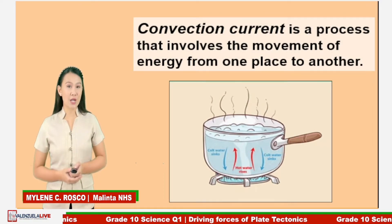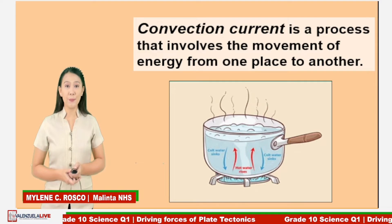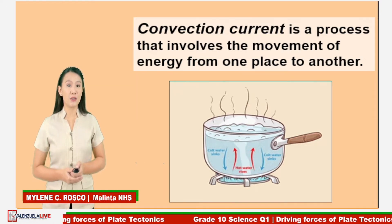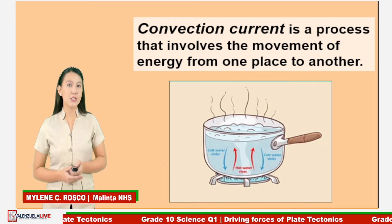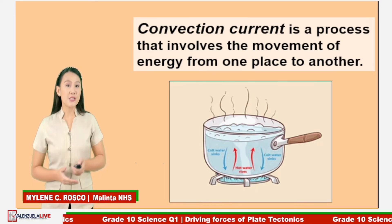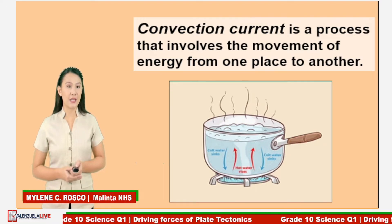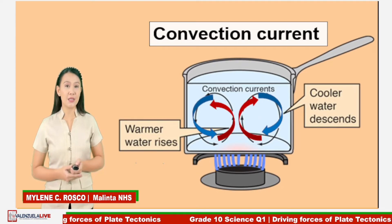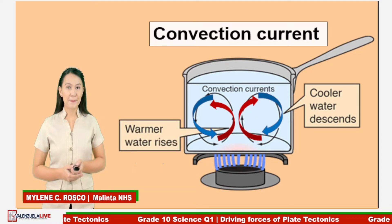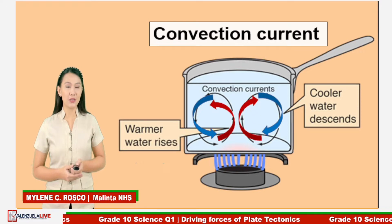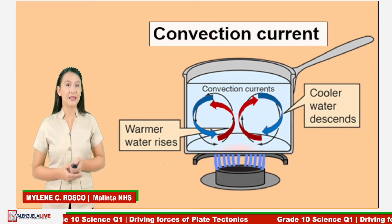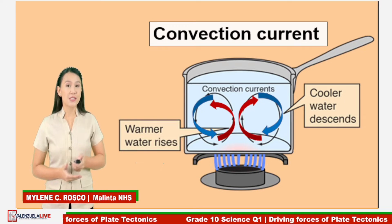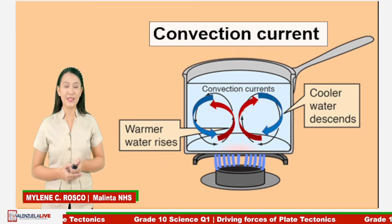Convection current is a process that involves the movement of energy from one place to another. When boiling water on a stove, the temperature of molecules within the liquid increases, and they slowly begin to move at a rapid rate. These molecules get charged up, thus producing kinetic energy. These hot water molecules residing near the heat source tend to become less dense. They rise above cooler, denser molecules, and as these hotter molecules rise, they cool down and begin to sink, replacing cooler molecules. This movement occurring in boiling water is what we call the convection current.